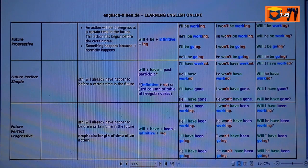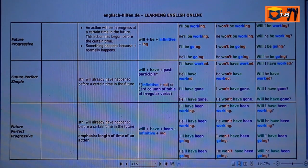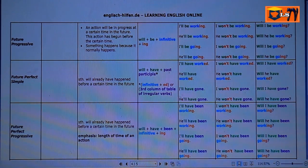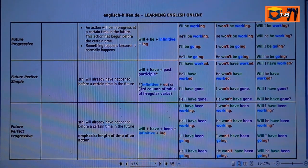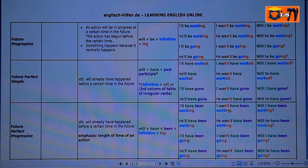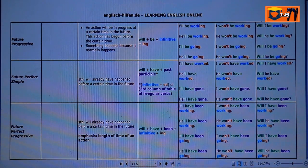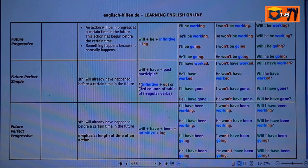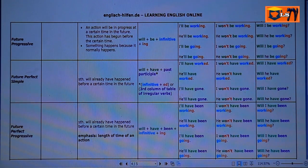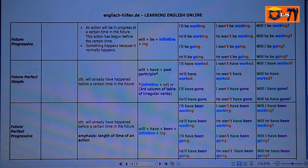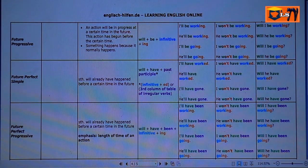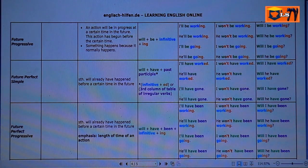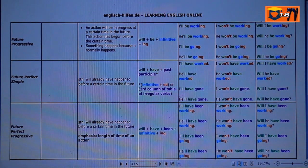The verb here we're using as an example is work. I'll have worked, he'll have worked, I'll have gone, he'll have gone. Negative: I won't have worked, he won't have worked, I won't have gone, he won't have gone. And in the last column, we can see the interrogative. Will I have worked, will he have worked, will I have gone, will he have gone.